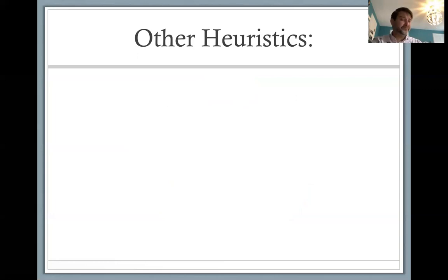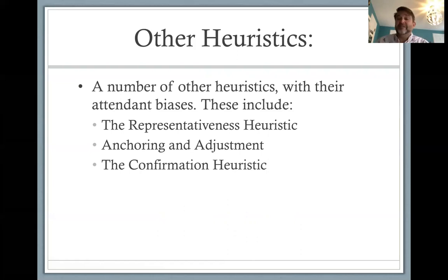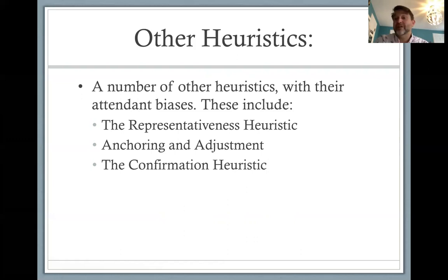Let me finish up quickly with some other heuristics to be on the lookout for. These are heuristics of judgment — they involve replacing a difficult question with an easier one, and biases often arise from this act of replacement. These heuristics include the representativeness heuristic, anchoring and adjustment, and the confirmation heuristic.